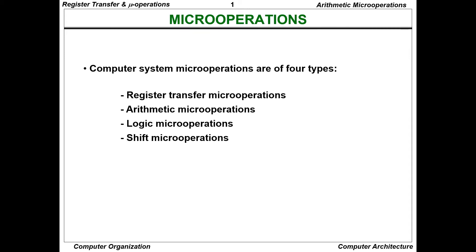Hello everyone. Today we are going to discuss about micro-operations. In a computer system, we have four types of micro-operations: register transfer micro-operations, arithmetic micro-operations, logic micro-operations, and shift micro-operations. Out of these, let us discuss about arithmetic micro-operations.